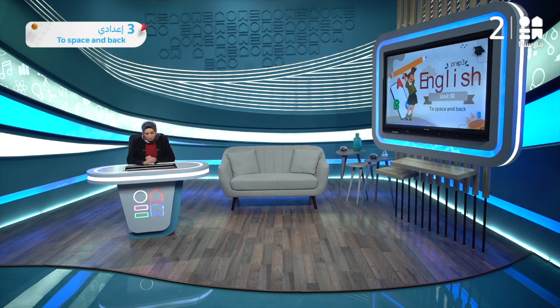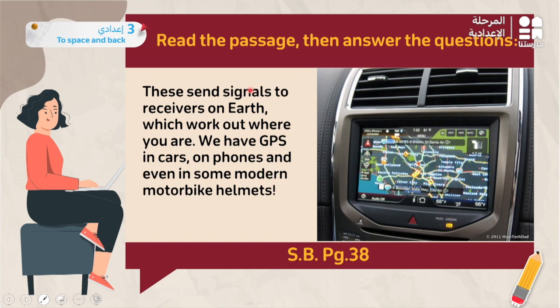These satellites send signals to receivers on earth, which work out where you are. We have GPS in cars, phones, and even in some modern motorbike helmets.